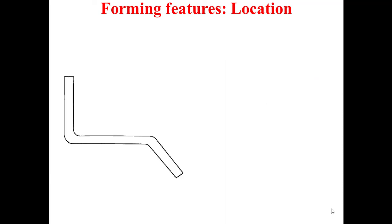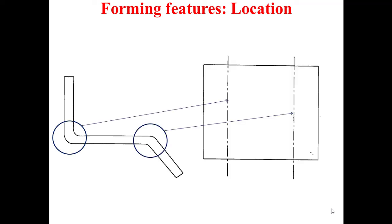For the location of these forming features, as you can see in this figure, we have a band and a flange located on the sheet metal blank with regard to an appropriate reference system, based on their line equations. Here we have the line equation of the band and the line equation of the flange, in this specific example.